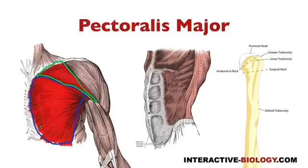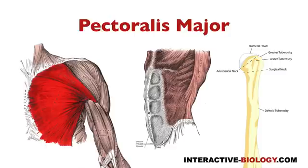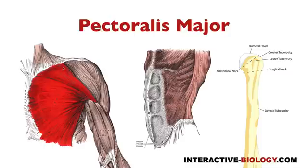You can see a separation between the two portions. When it comes to the origins, we have to distinguish between those two portions. The clavicular portion is called that because it's attached to the clavicle. The origin of the clavicular head is going to be the anterior surface, so the front of the medial half — not the entire clavicle, but just the medial half of the clavicle.